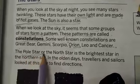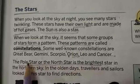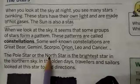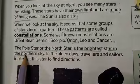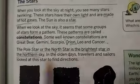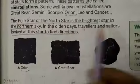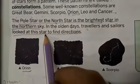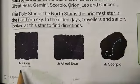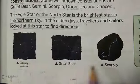The pole star, also called the north star, is the brightest star in the northern sky.